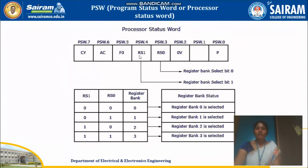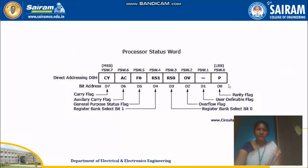The 3rd bit and 4th bit of PSW are responsible for selecting your register bank. D0 stands for parity flag, D1 stands for user-defined flag which is not in use, D2 is OV that is overflow — PSW 2nd bit. PSW 3rd bit and 4th bit are responsible for selecting your register bank among four banks. F0 is your general purpose or user-defined flag. For example, writing 'SETB PSW.4' and 'SETB PSW.3' means RS1=1 and RS0=1, so register bank 3 will be selected.